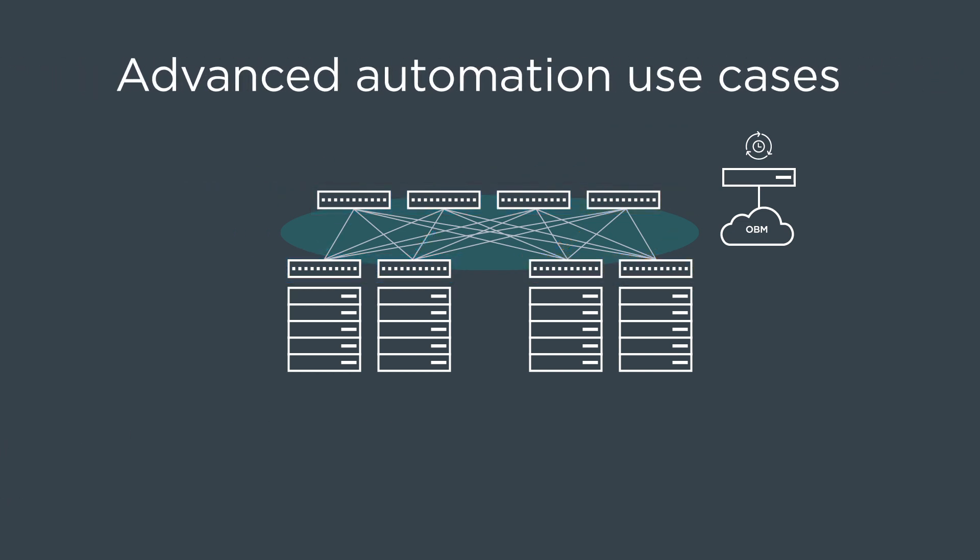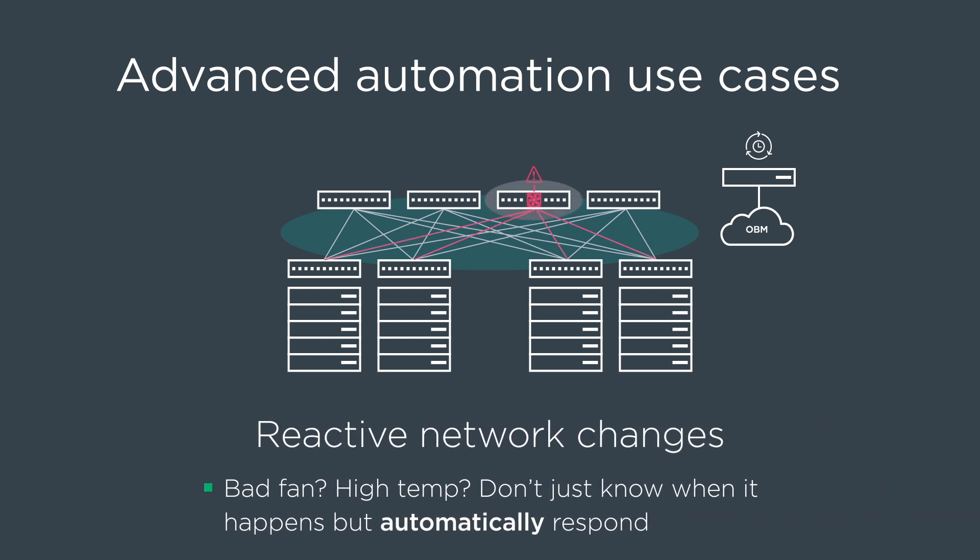Automation can also be used in an advanced case by allowing for more complex implementations. You can implement reactive network changes where, if something in the network is operating sub-optimally, you can automatically take a response.